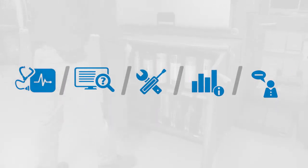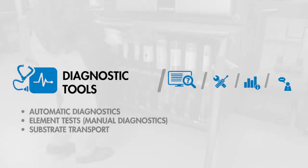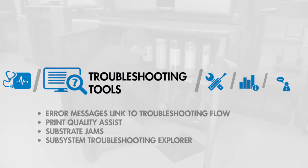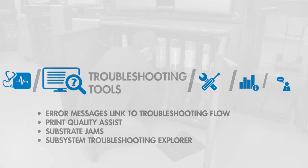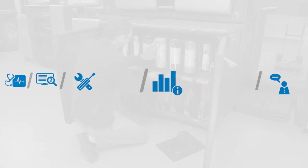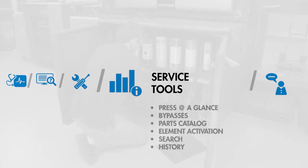There are many tools that operators can use either independently or with a remote service engineer. Easy-to-use diagnostics and troubleshooting tools lead your operators step-by-step through problem identification and resolution. Wizard-based maintenance tools guide users through calibration and maintenance. Service tools provide information on press status and enable the operator to activate or bypass elements and subsystems.